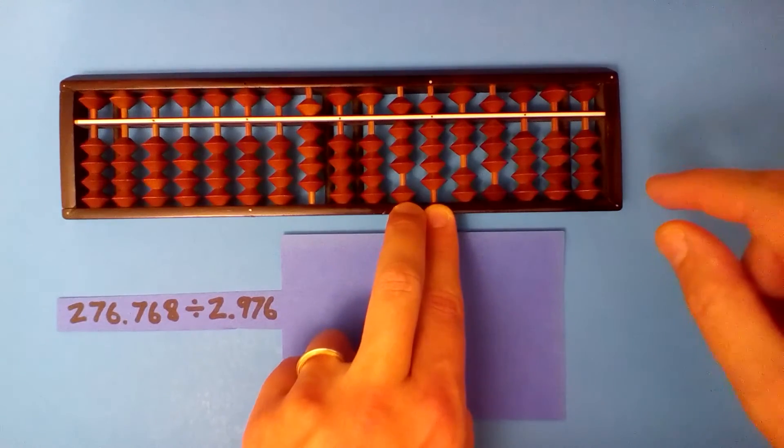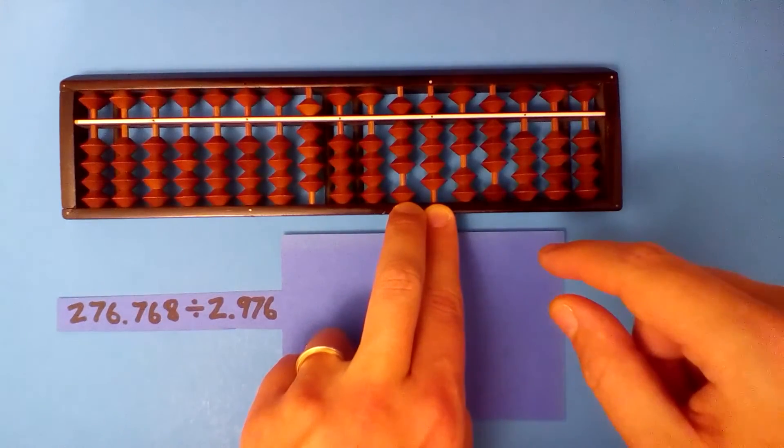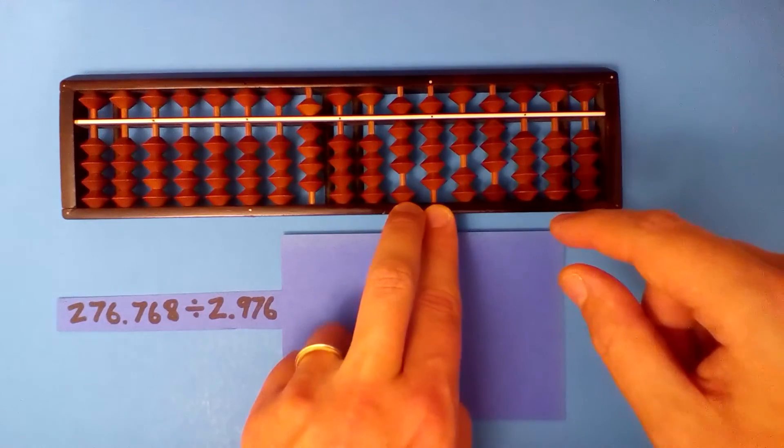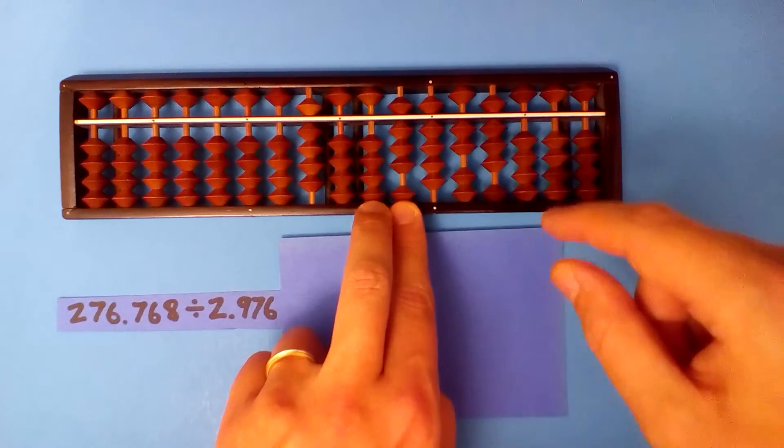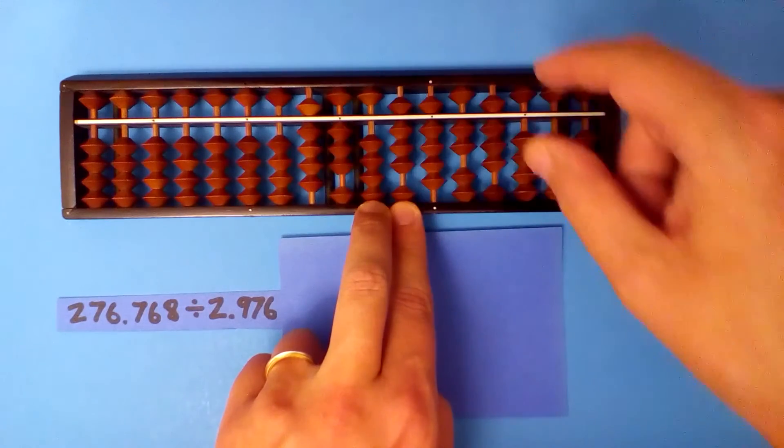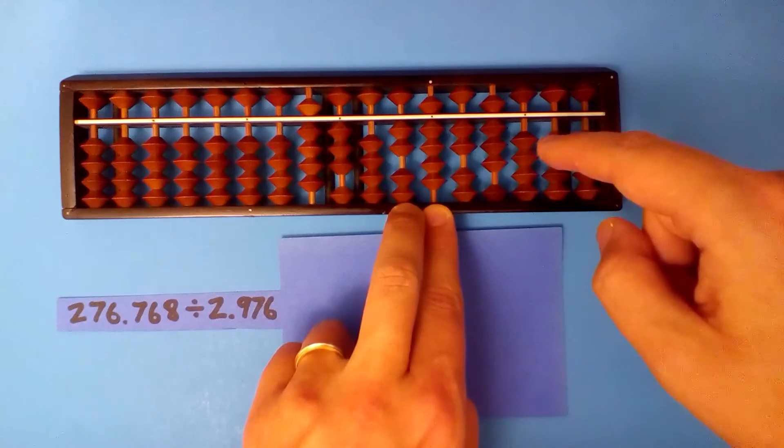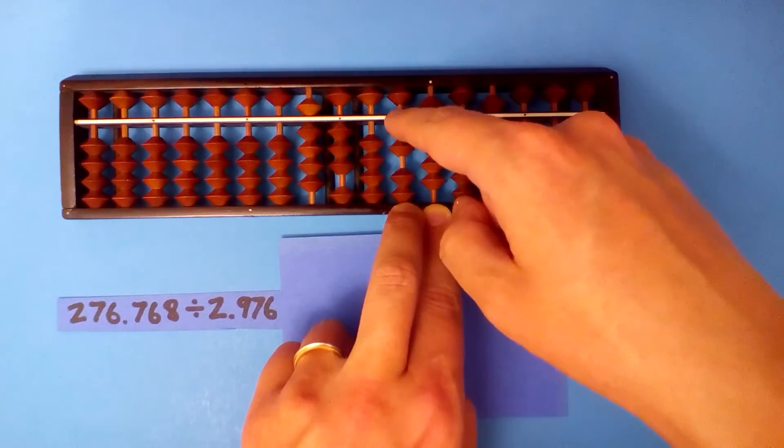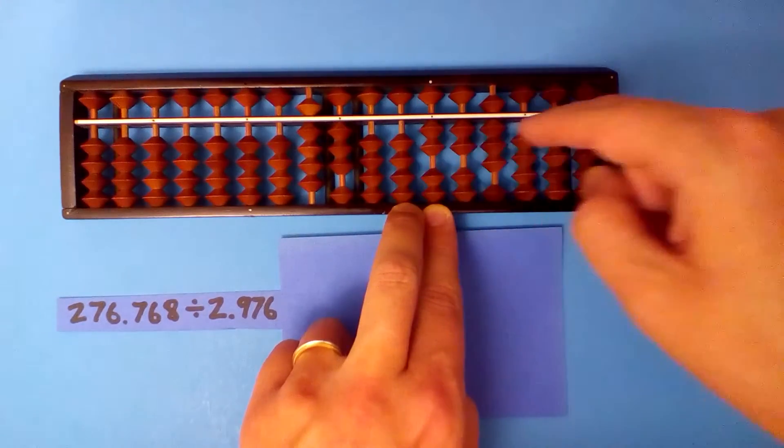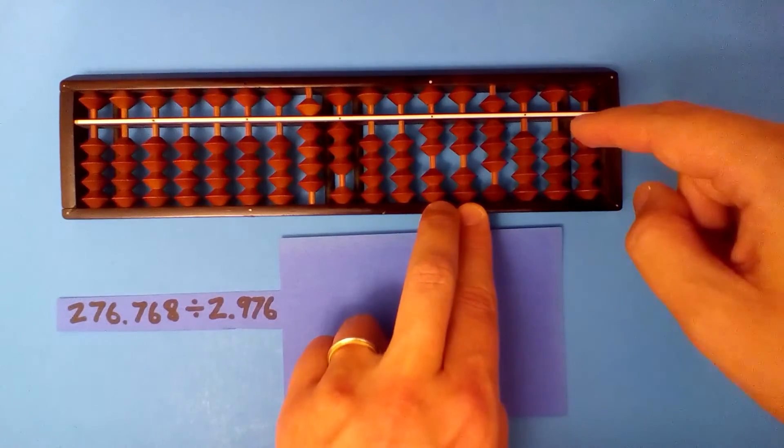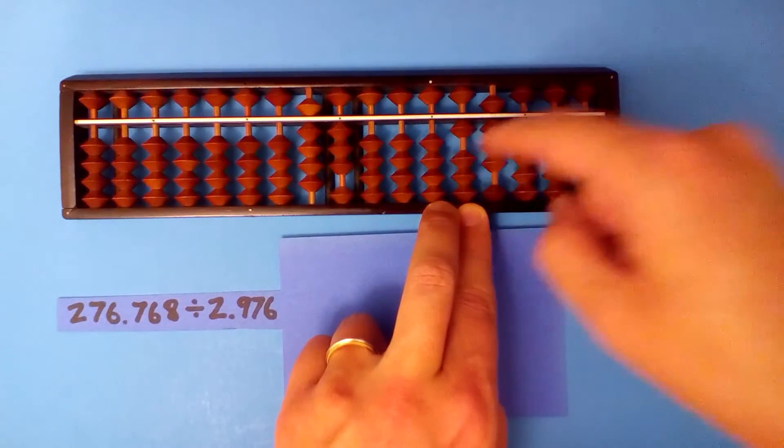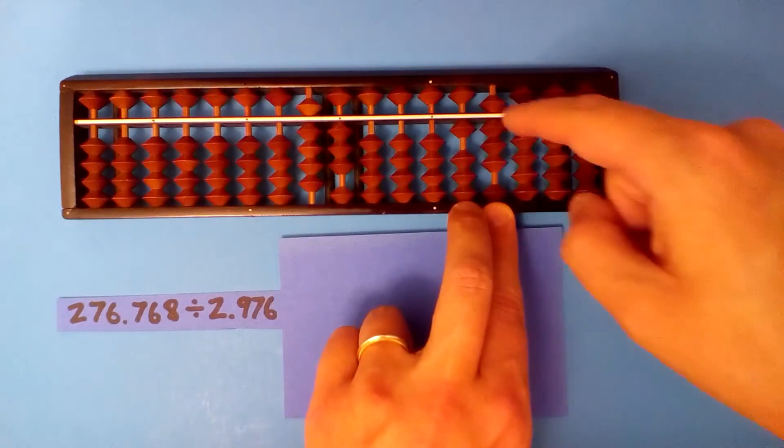2.9 into almost nine, three times. Three times two six, three times nine twenty-seven, three times seven twenty-one, and three times six is eighteen.